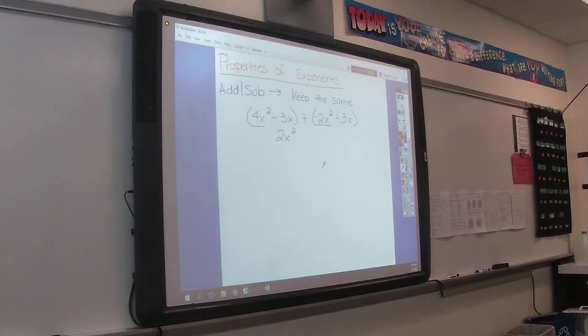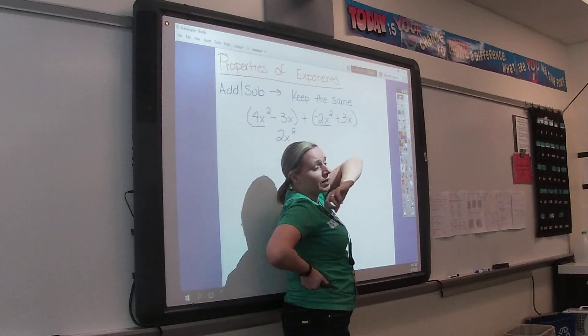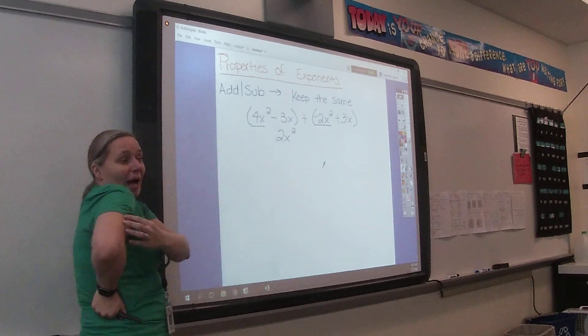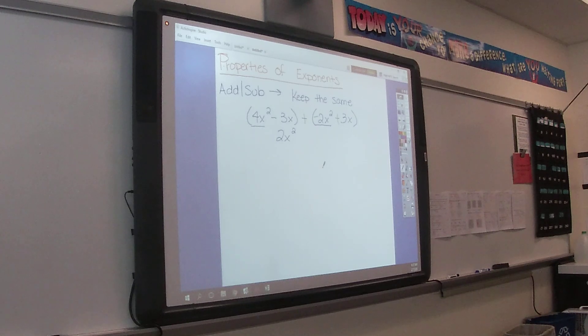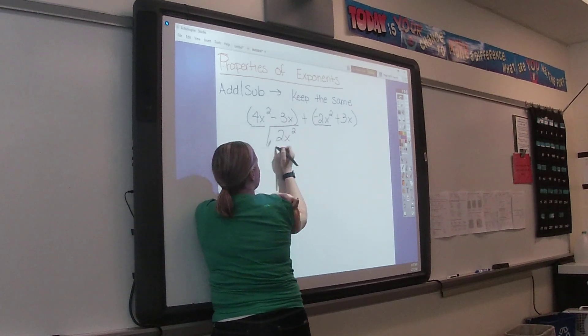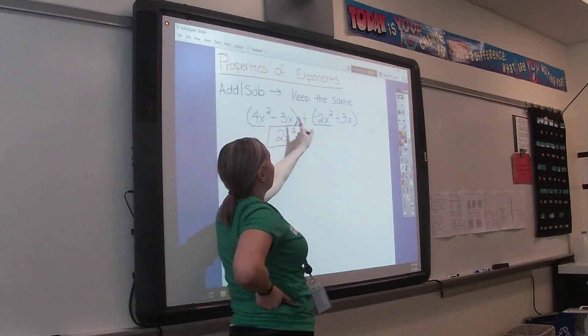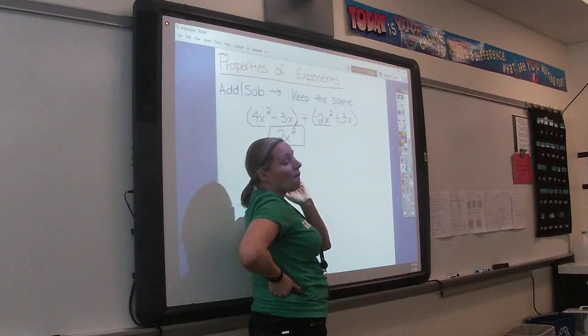And then once we had signs changed, then we would just combine like terms, keeping the exponents the same. So 4X squared plus a negative 2X squared gives us 2X squared. And a negative 3X plus a 3X is 0X. So our answer would actually just be 2X squared plus 5.